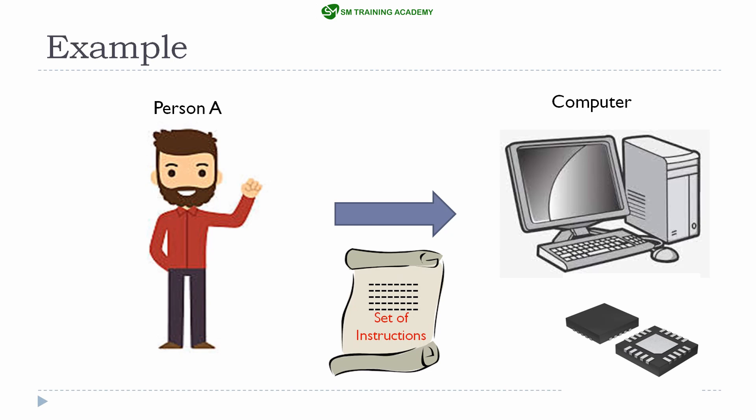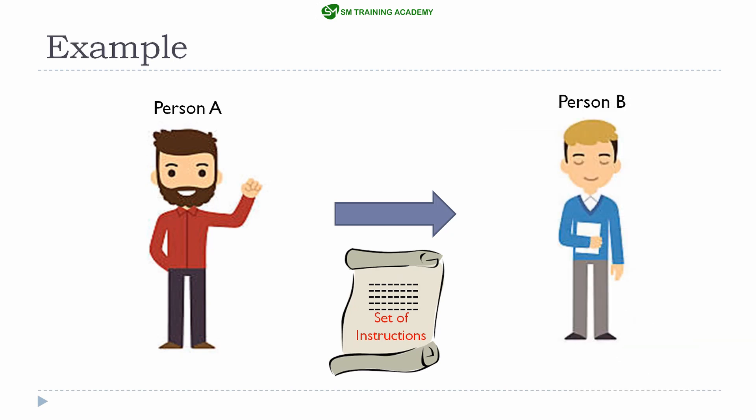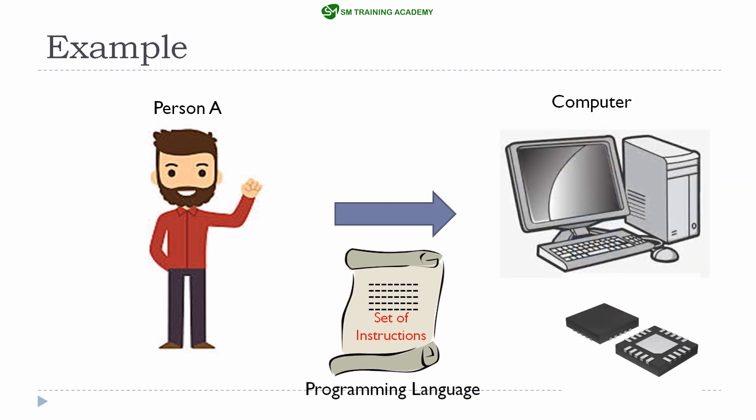The set of instructions written by person A must be understandable by person B, because person B is the one who is going to perform all the tasks. So person A needs to write all the instructions in a language understandable by person B. In the same way, person A is required to use a standard programming language such as C, C++, or Java for writing the program for the computer to execute a particular task.